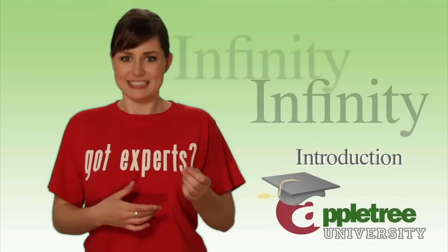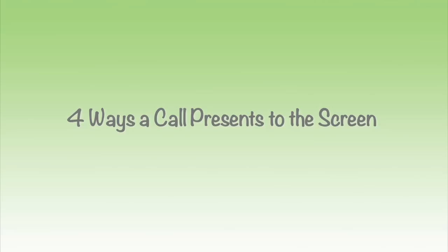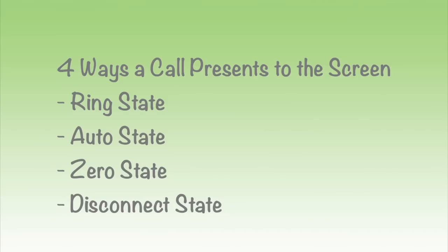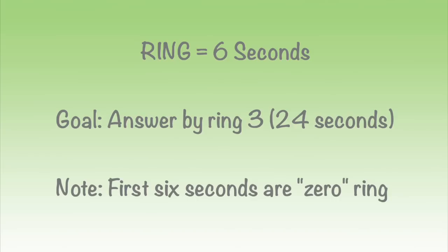There are four different ways a call can present to your screen, three of which will connect you with the caller. Those ways are Ring State, Auto State, Zero State, and Disconnect State. Before we break down these four ways, it is very important to understand that a ring counts for six seconds, and we strive to answer all of our calls within three rings, or 24 seconds. Keep in mind that the first six seconds are considered zero.